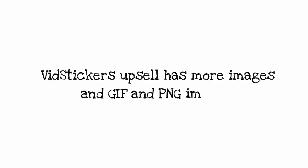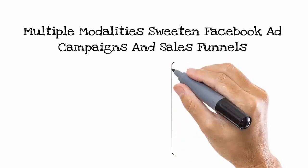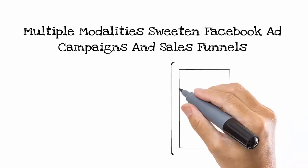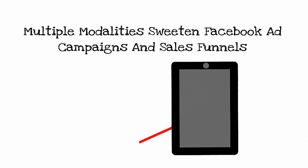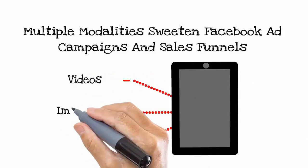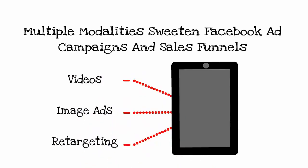Vidstickers has an even more delicious upsell offer with more animations and additional file types — GIF files and static images — and that expands your possibilities for working with multiple modalities when you're creating Facebook ad campaigns. I like to start a new campaign with a video ad, let Facebook create my custom audiences, and I often retarget those audiences with an image-based ad. When you have visually matching assets you can develop native ads, and those are proving to be highly effective when you're building a sales funnel.